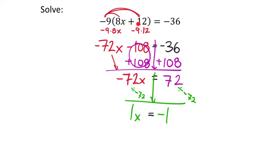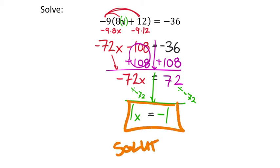Let's check by replacing x with negative 1: 8 times negative 1 is negative 8, plus 12 is positive 4, times negative 9 gives negative 36. Just type it into the calculator — you can use parentheses and negatives. Typing it in exactly as you see it gives negative 36, which matches. It's a true statement, so x equals negative 1 is our solution.